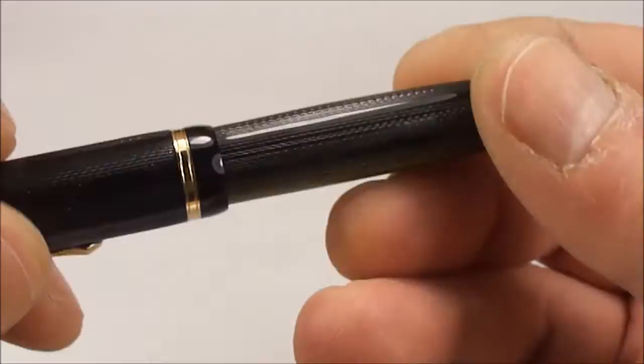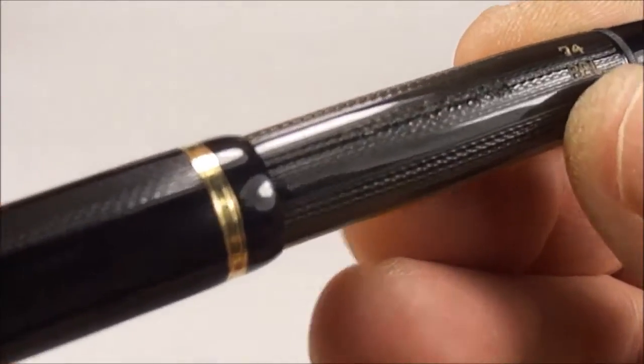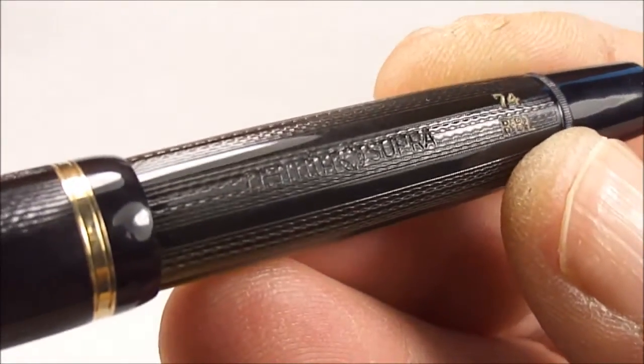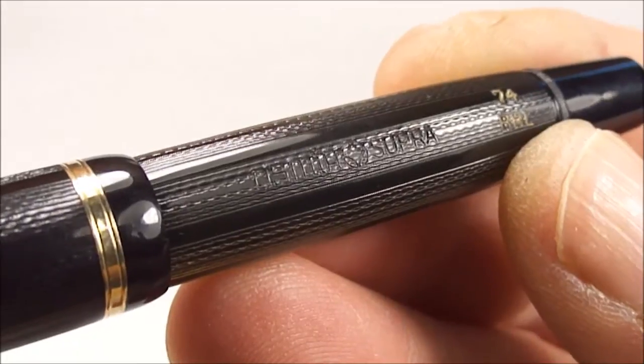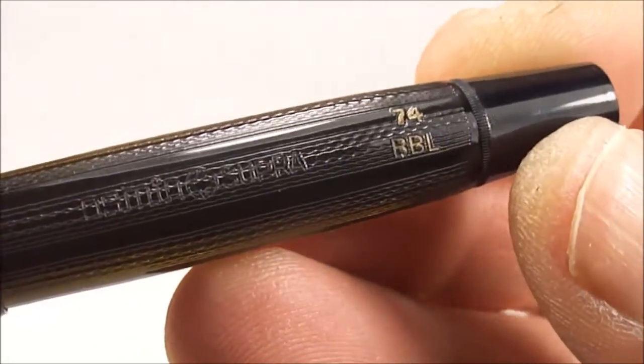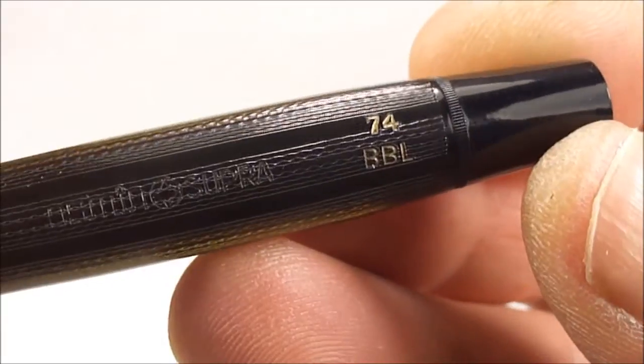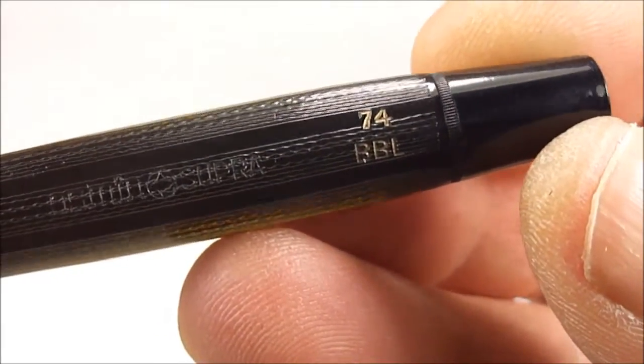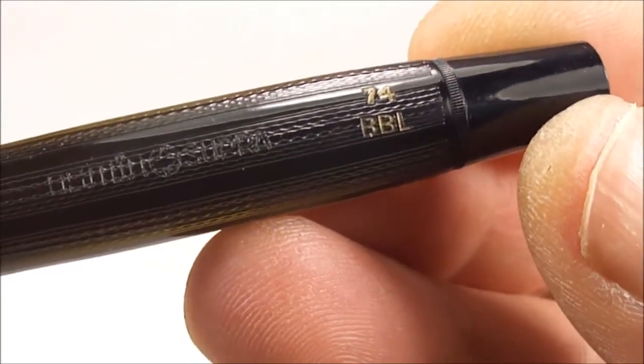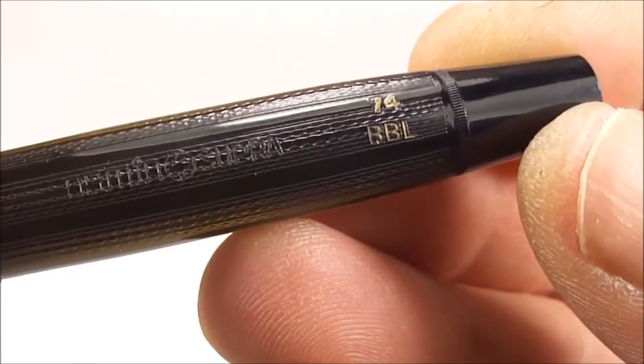All in all a very nice pen. Let's show you the barrel imprint. So there you can see it says Osmia Supra and then to the end of the barrel there it's got the model number which is 74 and then underneath there we've got BBL.